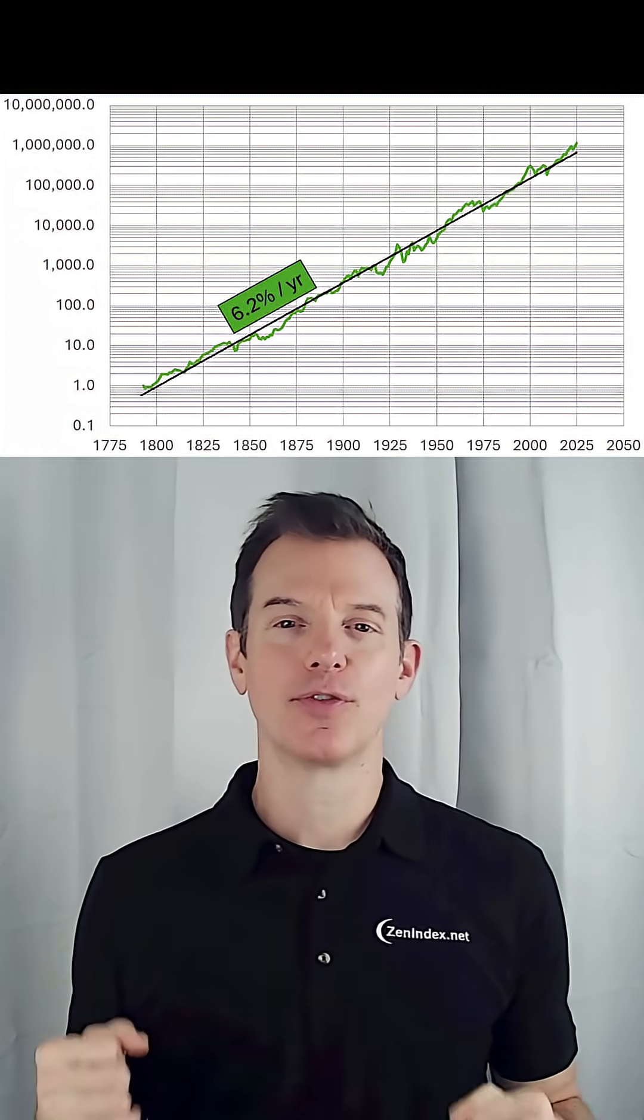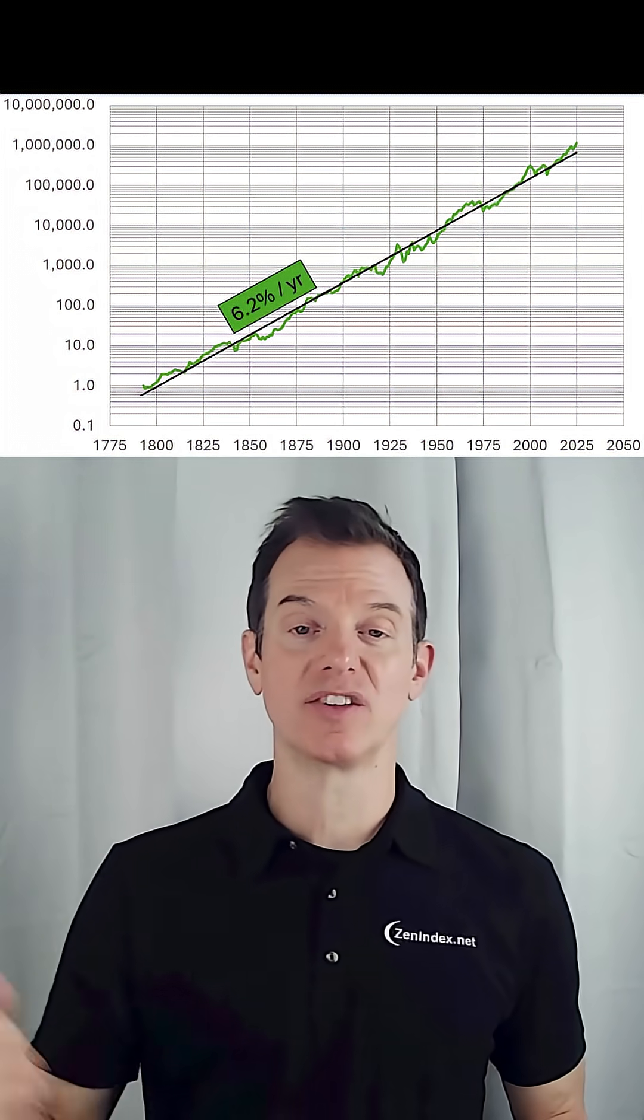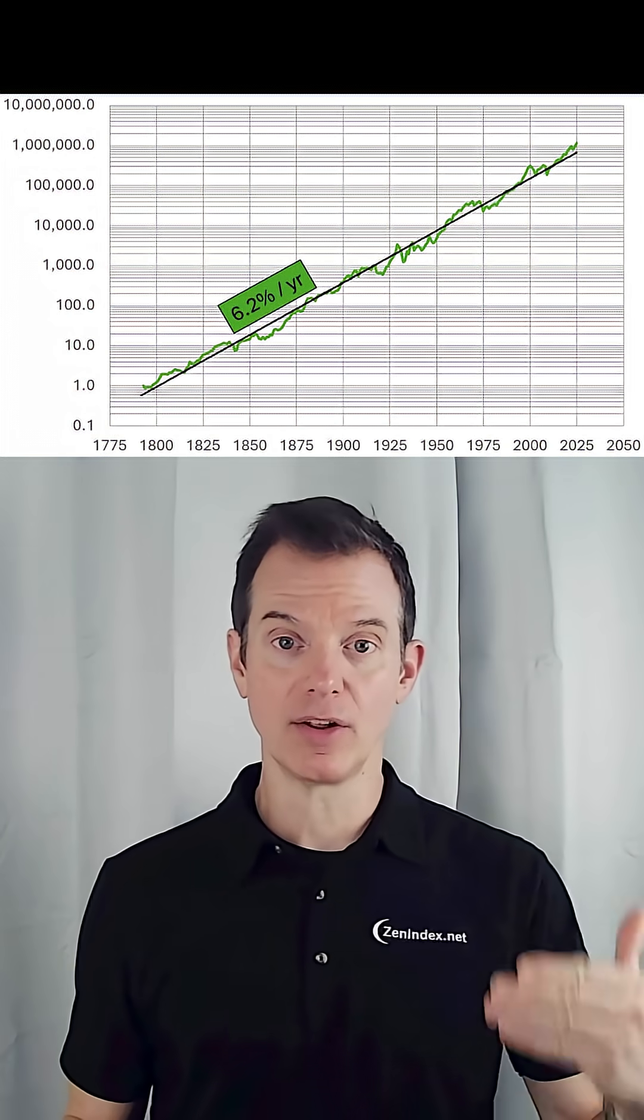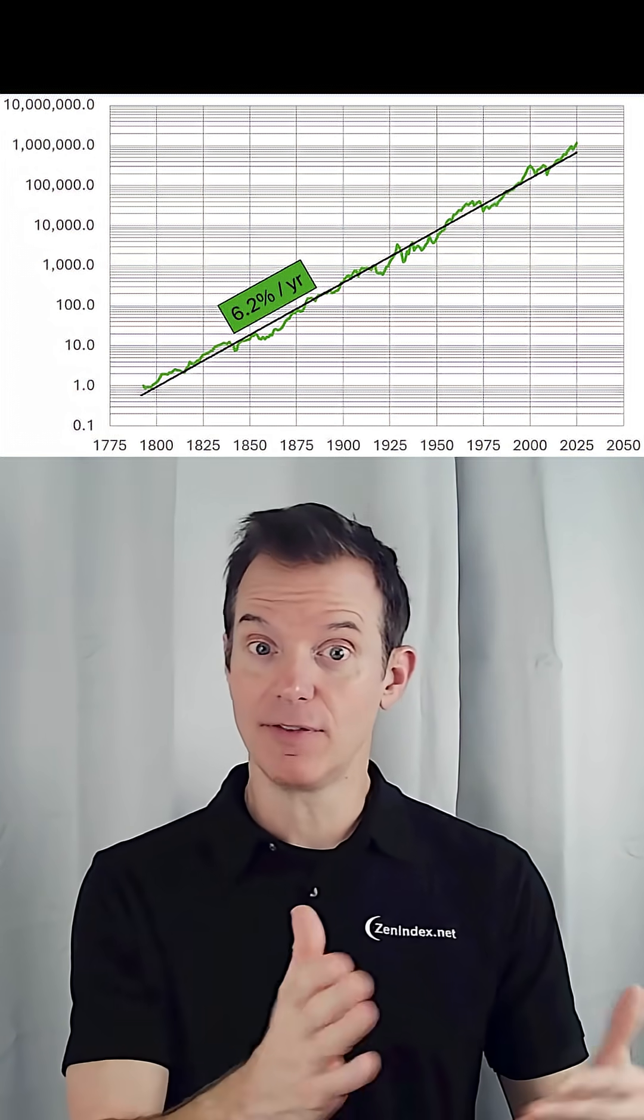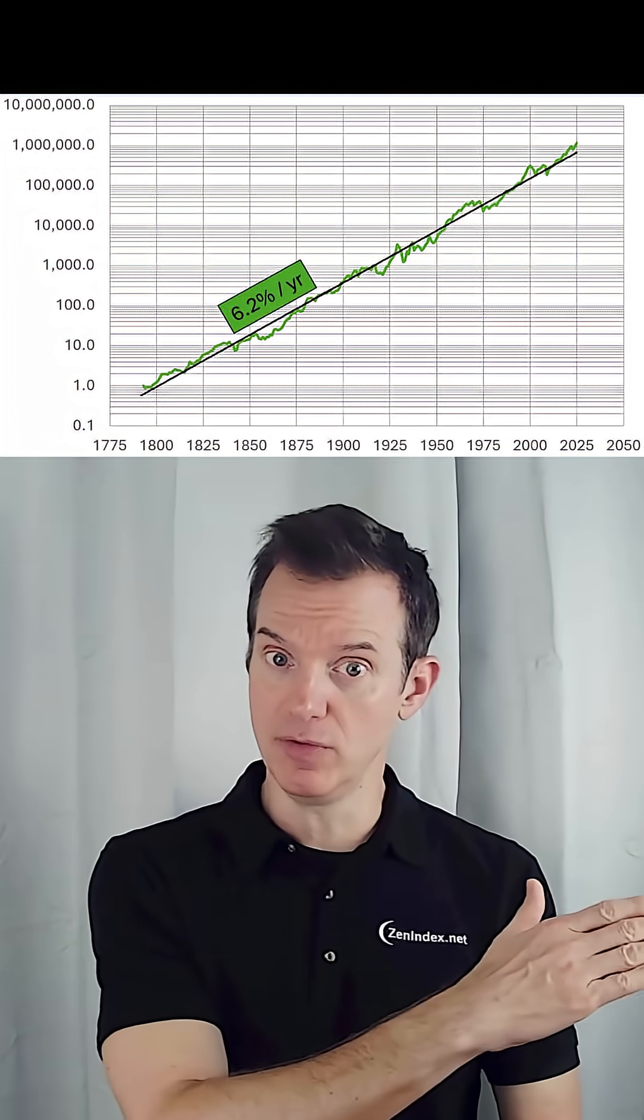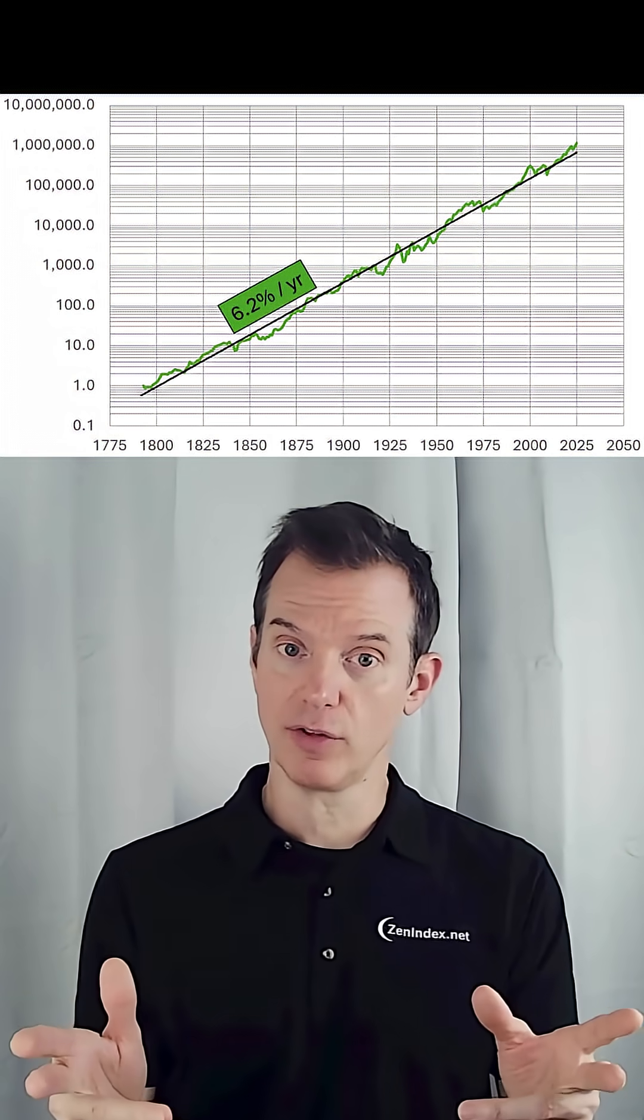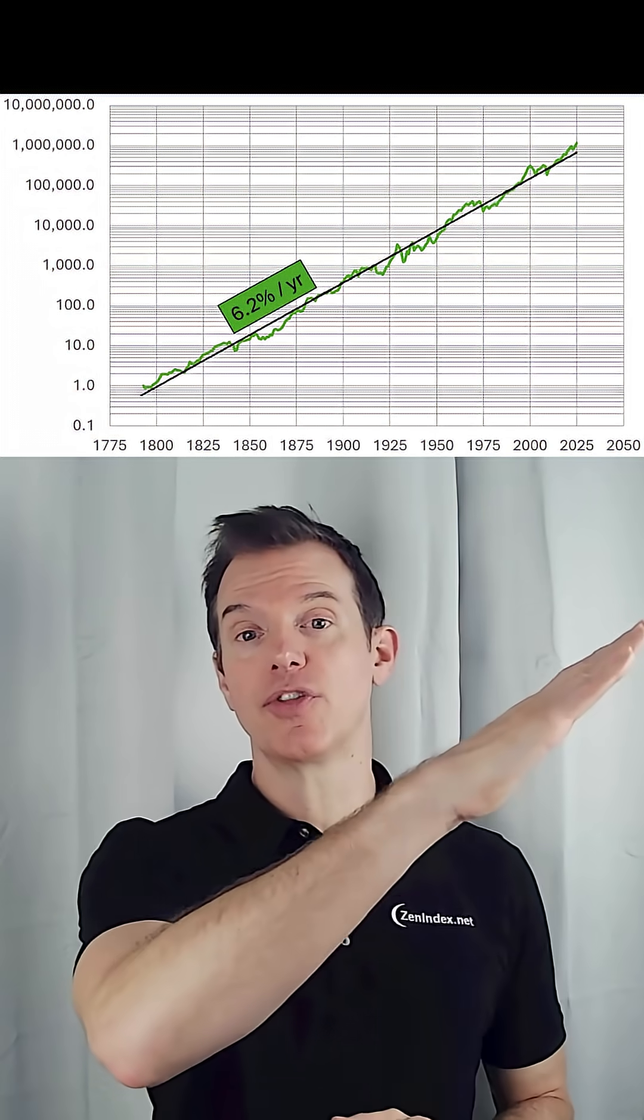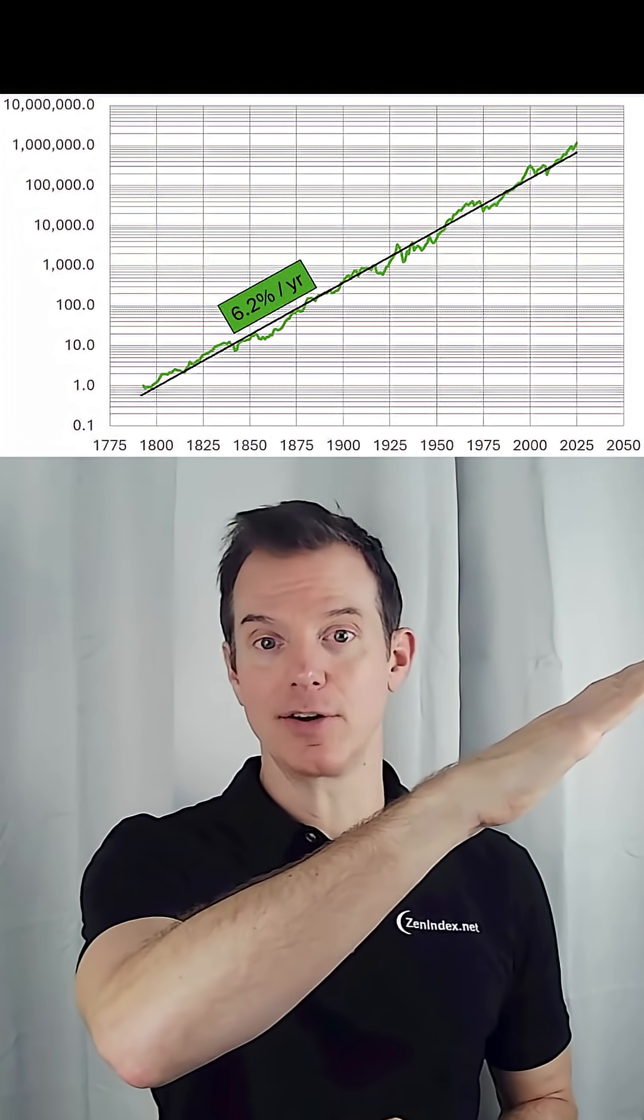So here is this data that goes from 1791 all the way to 2025. This is the S&P 500 total real return. That is, we have taken inflation and considered it here and removed it. So this is real return, real value for the S&P 500 index for the last 232 years. And you can see the pattern here.